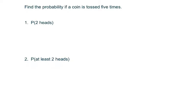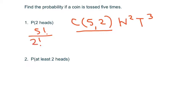So let's look at another one. Find the probability of a coin if it's tossed five times, two heads. So we're going to write C(5,2). And the two goes with the heads, and so that means the tails has to be three. So we don't want to write all this out. Basically this would be five factorial over two factorial three factorial, which should be 10.